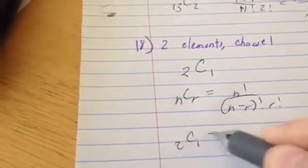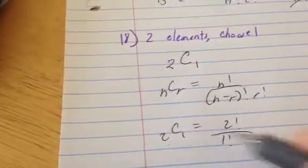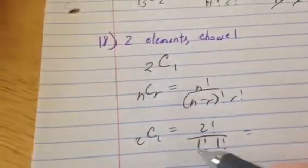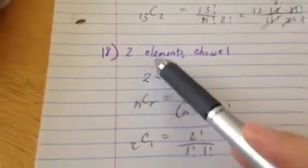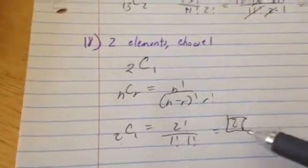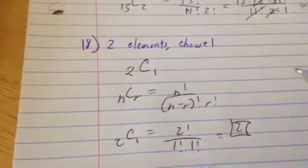And I would get two choose one is two factorial over two minus one is one factorial times an extra one factorial. So you just get two factorial which is two. And that makes sense. If there are two elements and you want to choose one of them, there are only two ways of doing it. You can choose one or the other.